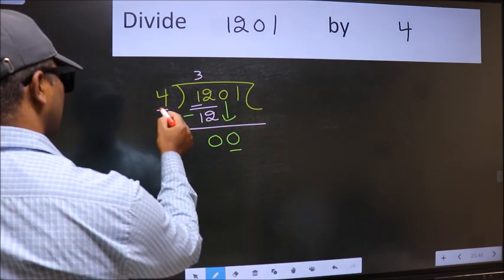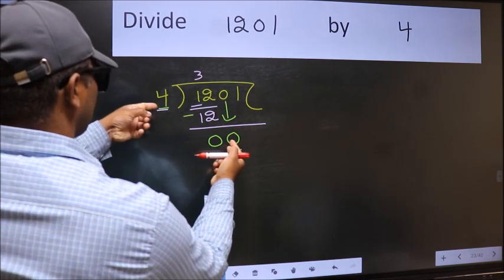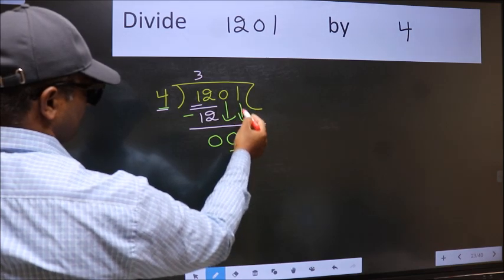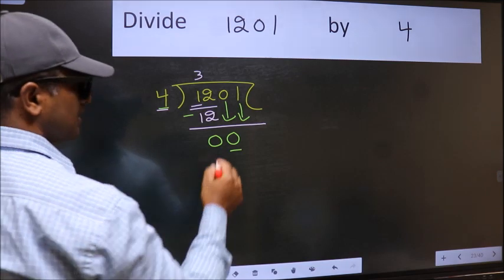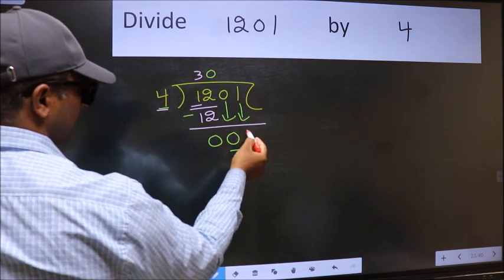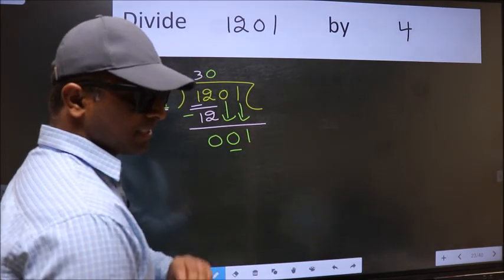Now here we have 0 and here 4. 0 is smaller than 4, so we should bring down the second number. And the rule to bring down the second number is we should put 0 here. Then only we can bring down the second number. After this step, the mistake happens.